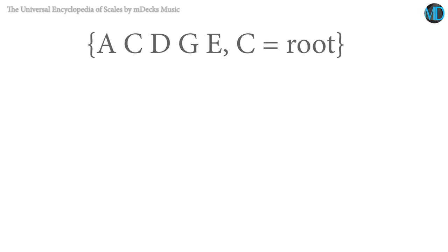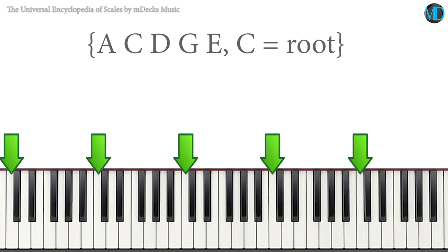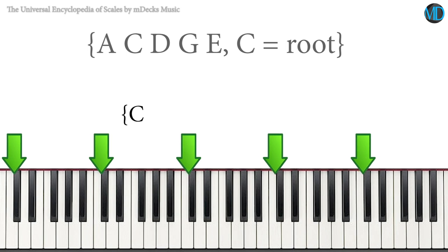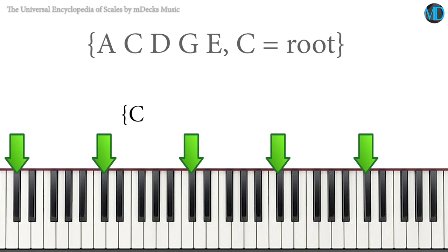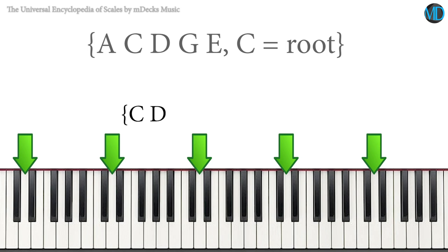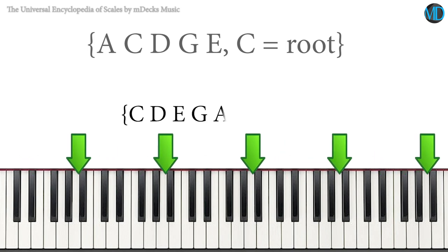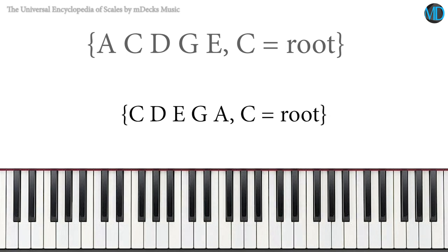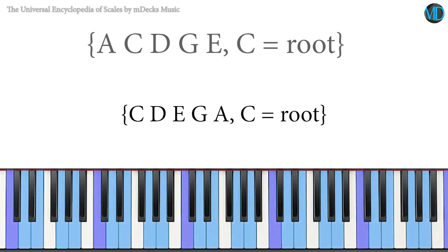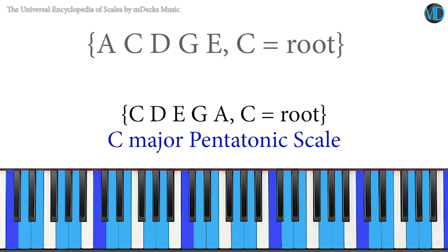For example, let's take A, C, D, G, and E with C as our designated root. We start on C, the designated root, and then we go up chromatically. C sharp is not in the set, but the next note, D, is. We continue this until we have all the notes in the scale sorted. Now we have sorted the scale and we have C, D, E, G, and A with C as the designated root. This is nothing more than the C major pentatonic scale using our definition of what a scale is.